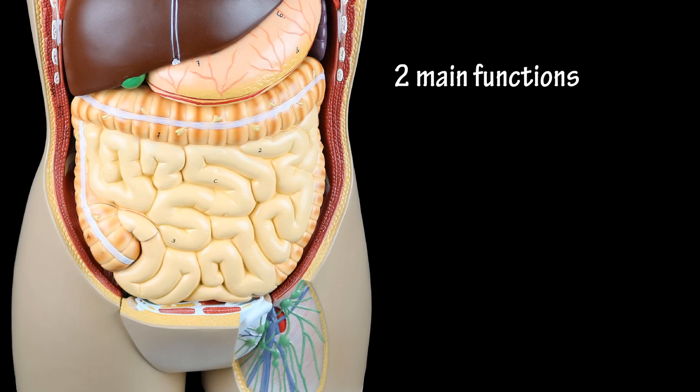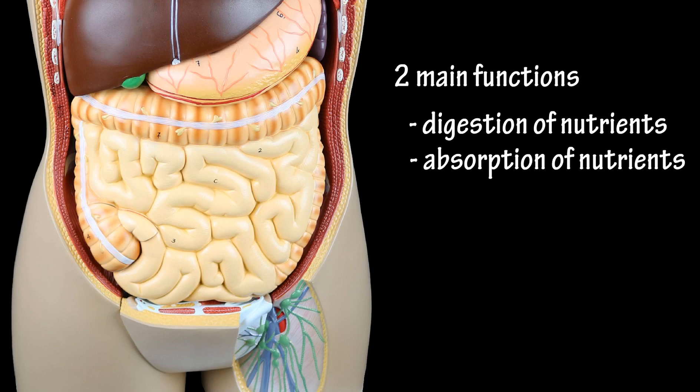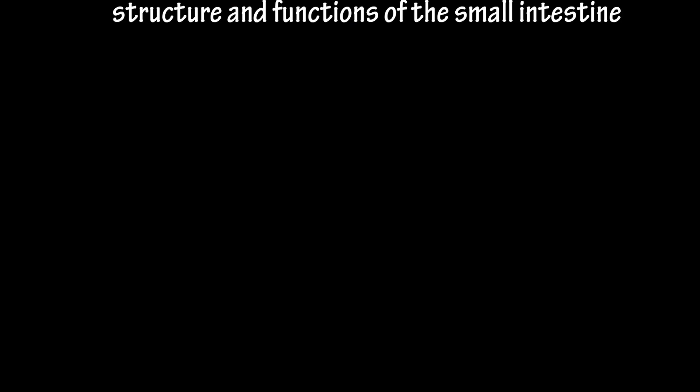The small intestine has two important functions: digestion of nutrients and absorption of nutrients. The tremendous amount of surface area of this organ makes it perfect for this. I will cover in depth the process of digestion and absorption of all the different types of nutrients in future videos. And that covers the basics on the structure and functions of the small intestine.